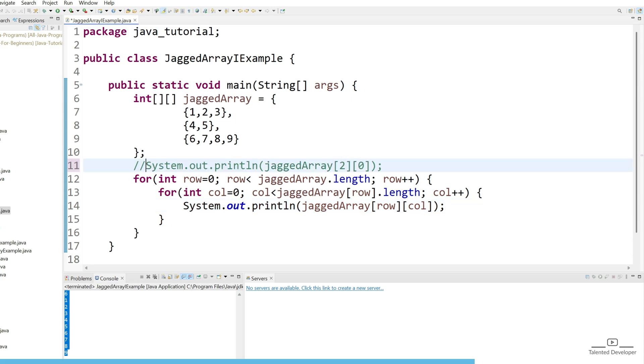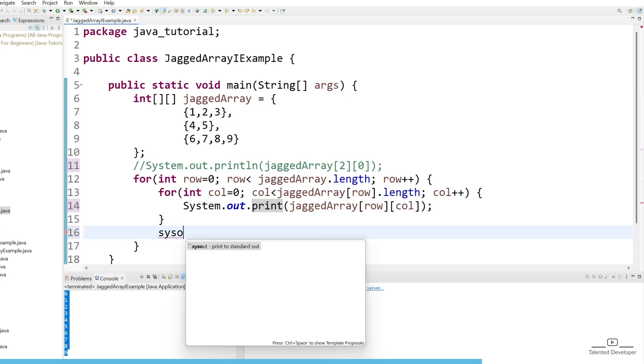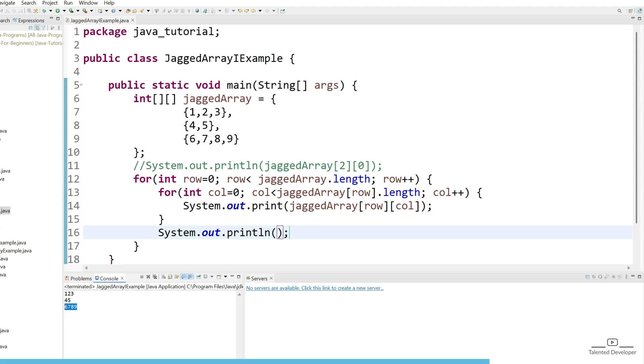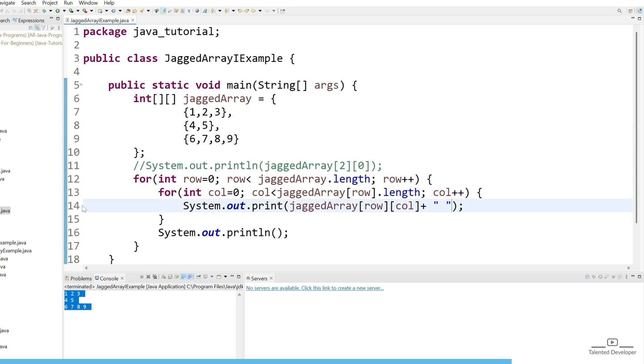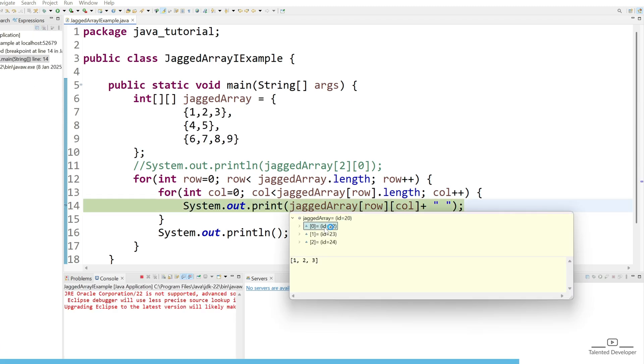If you run now, it will give the data as rows and columns, but this structure is not looking perfectly fine. What you can do is just use double quotes and give a space. Now if you run, you can get the data like how we declared. If you have any doubt, please use the breakpoint and you can see at index 0 we have this array, at index 1 we have this, and at index 2 we have this data, and how we are iterating.